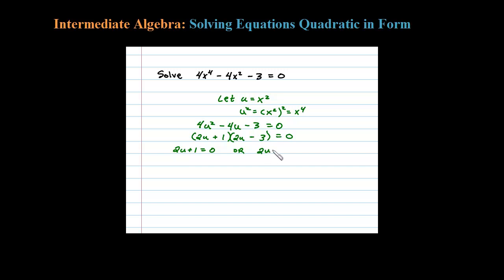Solving like normal: 2u minus 3 equals 0 gives 2u equals negative 1, so u equals negative 1 half. Or u equals 3 halves. So there are two solutions for u, but we're actually solving for x.